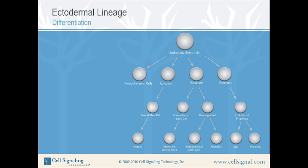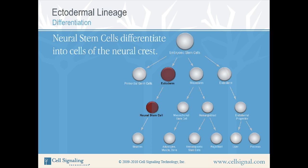Ectodermal Lineage. One of the three primary germ layers is the ectoderm. Cells of the ectoderm differentiate into neural stem cells, thereby creating all the cells of the neuronal lineage. Neural stem cells differentiate into cells of the neural crest. The neural crest is a transient component of neuroectoderm present during formation and closure of the neural tube. These very important cells can give rise to neurons and glia of the autonomic nervous system, as well as bone, cartilage, tendons, and smooth muscle.